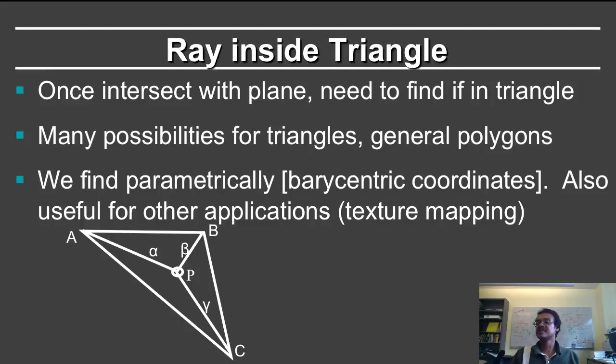A, B, and C are the vertices of the triangle. Alpha, beta, and gamma correspond to the distances of the point P from A, B, and C respectively. They are normalized so that alpha plus beta plus gamma is equal to 1. This is known as the barycentric coordinates for a triangle.